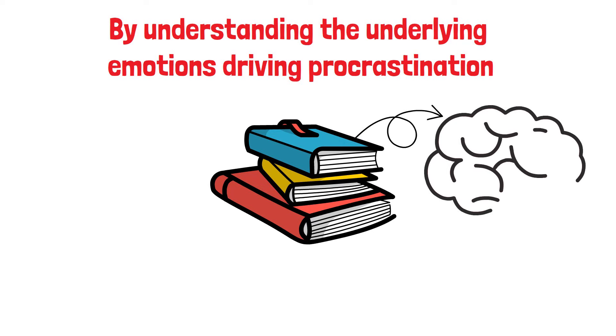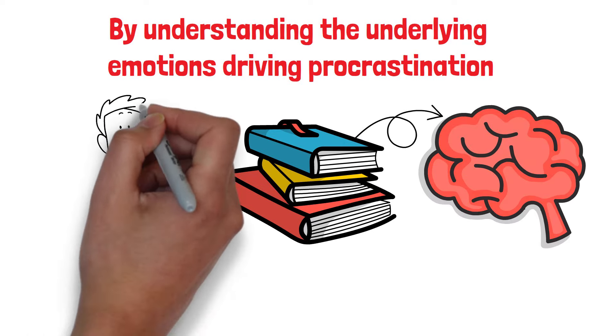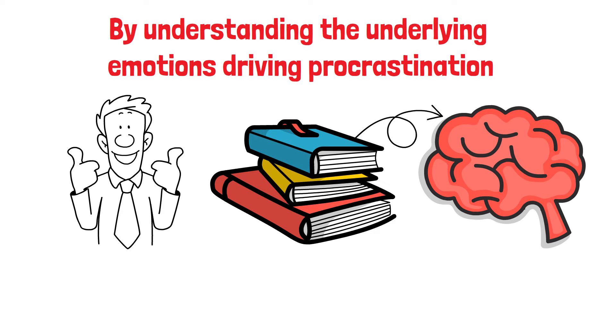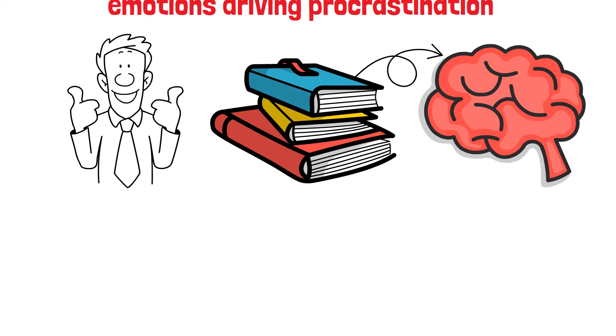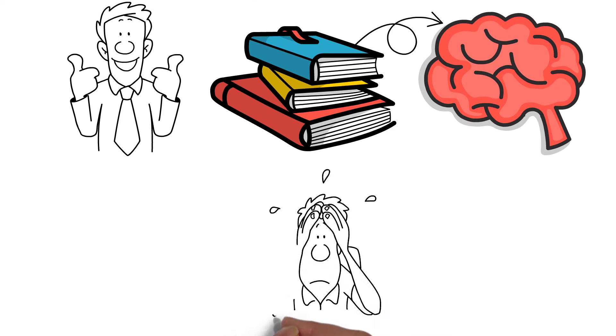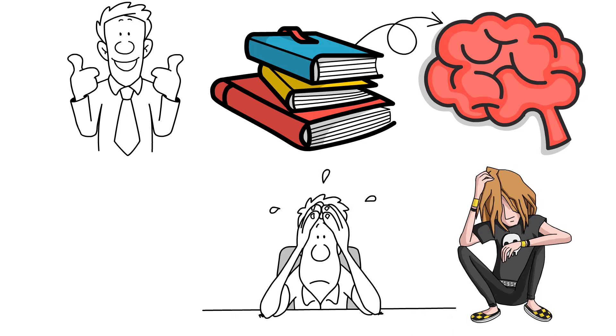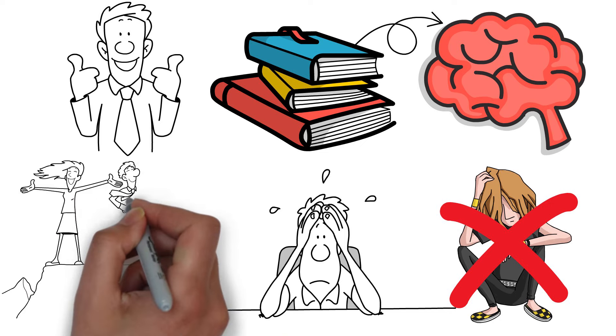Studies show that procrastination is often linked to our brain's reward system. When we procrastinate, we're prioritizing short-term pleasure, like scrolling through social media over long-term goals, leading to a vicious cycle of guilt and stress. If you find yourself procrastinating frequently, know that you're not alone, and there's nothing inherently wrong with you. It's simply a behavior that we can learn to manage and overcome.